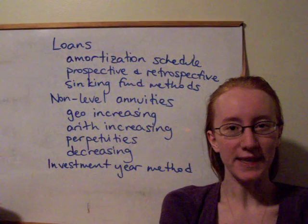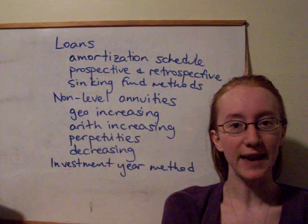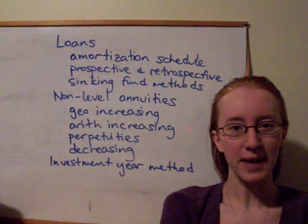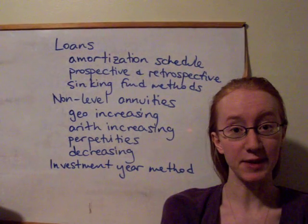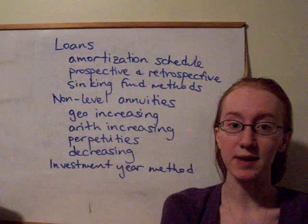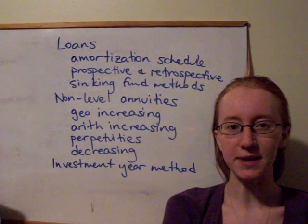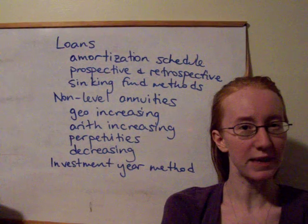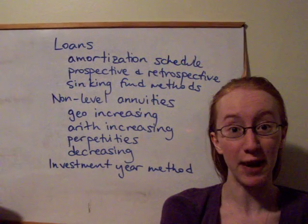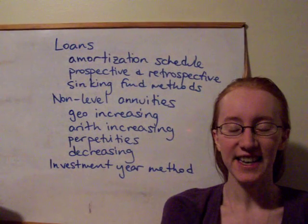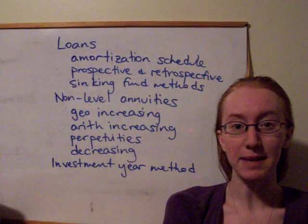A loan is basically just an annuity — it's a series of level payments that are made to pay off a particular amount at time zero. So the time zero amount is the loan amount, and with a loan we always assume that payments are made at the end of each time period. It wouldn't really make sense to get a loan and then immediately have to make the first payment right then and there. So the payments are always at the end, meaning we're dealing with an annuity immediate.